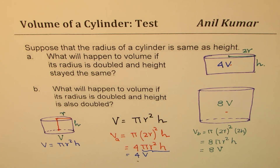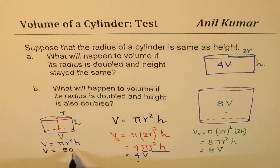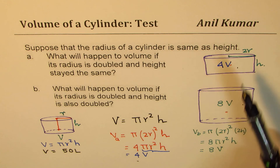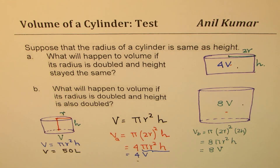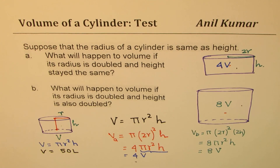I hope this concept is absolutely clear. Now, if I say that the volume here is 50 liters, can you write down the volume for these two cases? So write down the volume for part A and B if we have a volume of 50 liters for the original cylinder. Let that be an exercise for you. I hope you like it. Feel free to share my videos and if you subscribe, that would be great. Thank you and all the best.